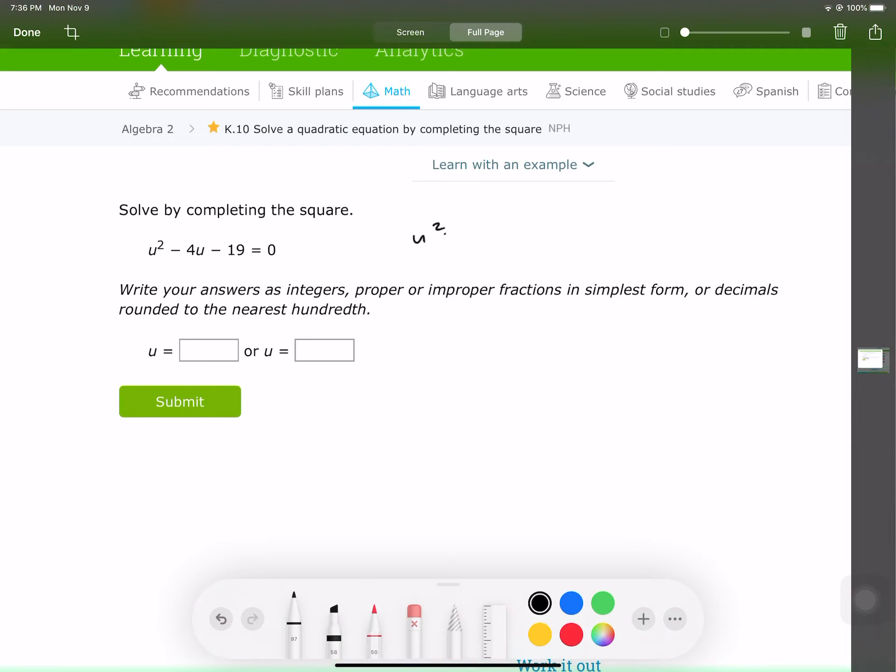u squared minus 4u minus 19. This is not a perfect square. So what's a perfect square I want? u minus 2, because we divide this by 2. Divided by 2. The perfect c I wish I had was plus 4. If I add 4 and minus 4, we combine that to be negative 23.